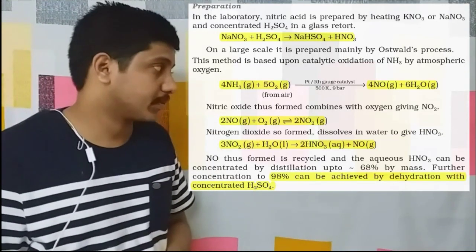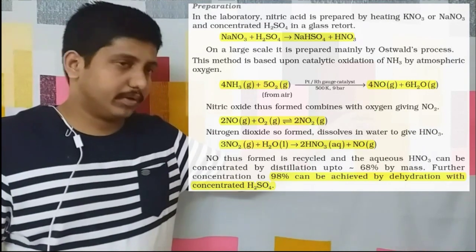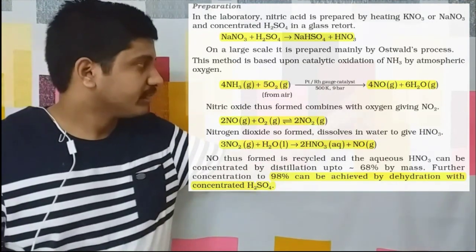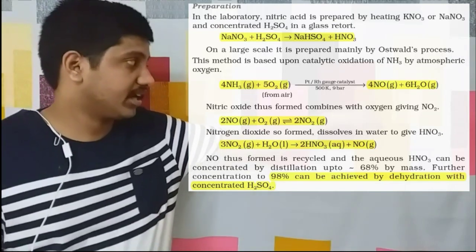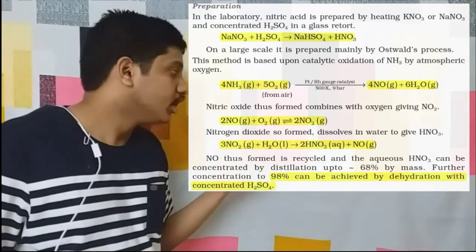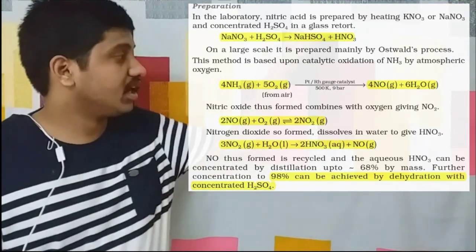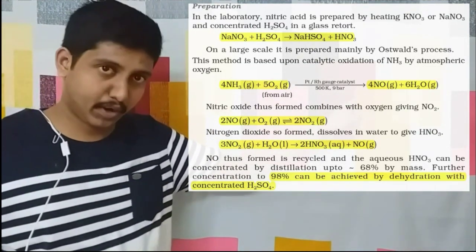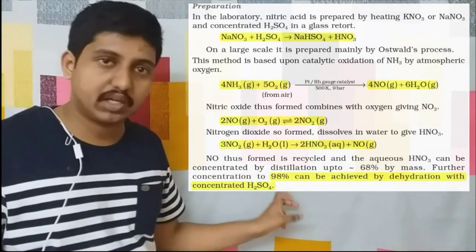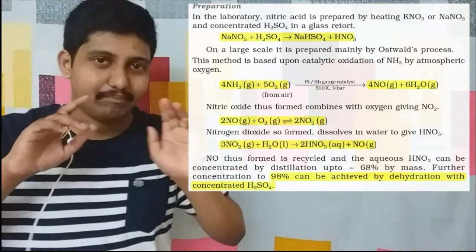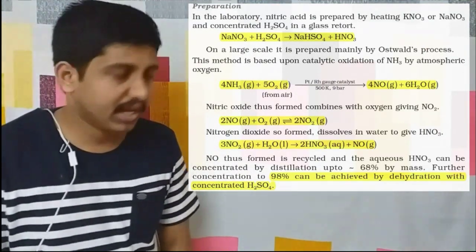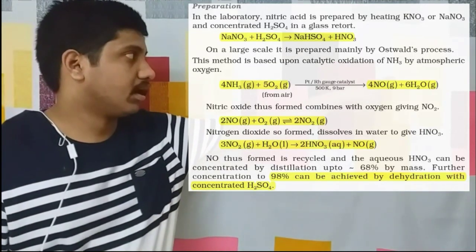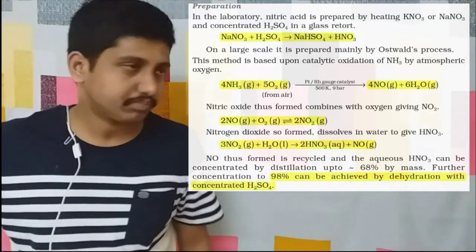In Ostwald's process: NO is produced first. Then this NO combines with the remaining oxygen from air to produce NO2. This NO2 again combines with water — the third reaction — to form HNO3. That is the main commercial preparation. So understand these three steps: ammonia with oxygen produces NO; NO combines with oxygen to form NO2; NO2 combines with water to form HNO3.